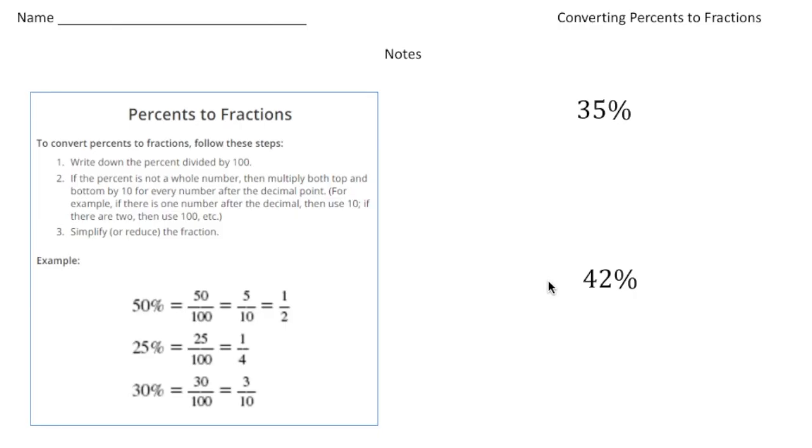So there's several ways of doing this, but really I like this kind of three-step method. Step number one says write down the percent divided by 100. So here it is. For 50%, you write down the percent, which is right here, and you divide it by 100.